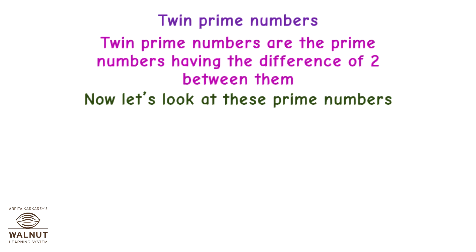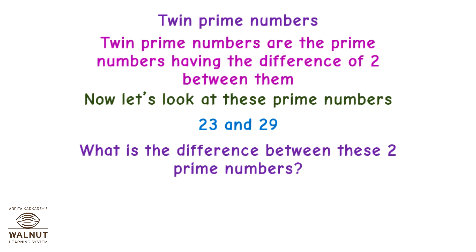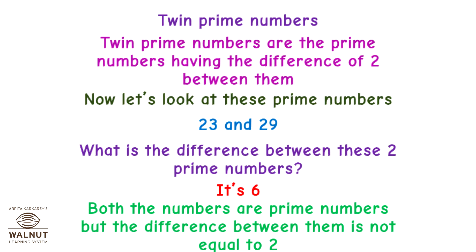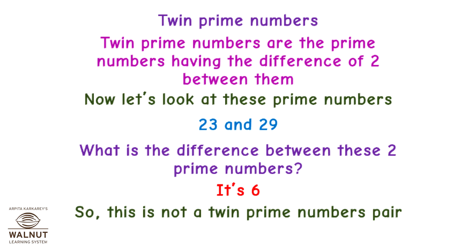Now let's look at these Prime Numbers: 23 and 29. What is the difference between these two Prime Numbers? It's 6. Both the numbers are Prime Numbers, but the difference between them is not equal to 2. So this is not a Twin Prime Numbers pair.